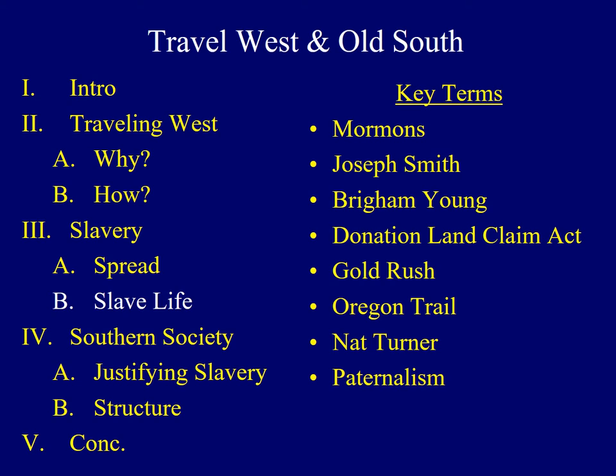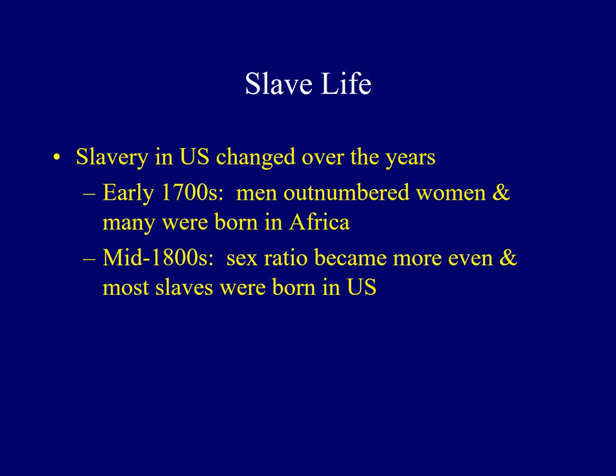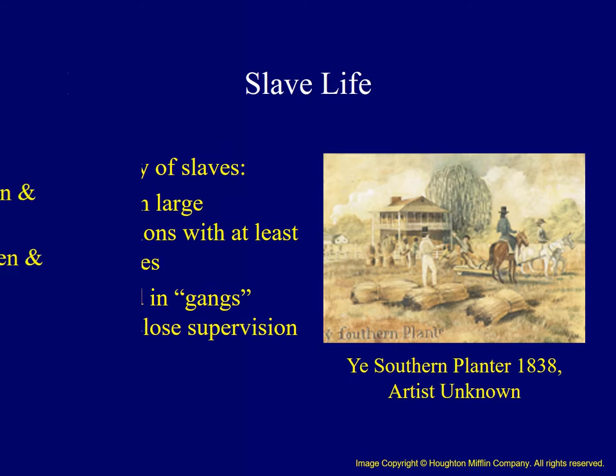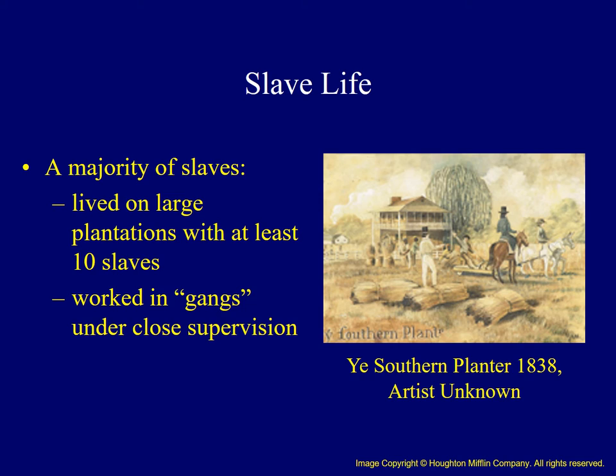We can now explore some aspects of slave life in the Old South. Slavery in the United States changed dramatically between the early 18th and mid-19th centuries. In the 18th century, male slaves outnumbered females by large percentages, and many had been born in Africa. In later years, the sex ratio became more even, and the number of native-born slaves increased. Congress outlawed the African slave trade in 1808. Most slaves worked on large plantations with ten or more slaves, where they were usually closely supervised and worked in gangs.